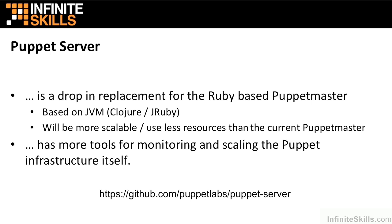You can find more information on the Puppet Server by visiting its development page at GitHub: github.com/puppetlabs/puppet-server. On that page you'll find information about the server itself, the current status, documentation on how to use the server, and some of the differences between operating the Ruby-based Puppet Master and the Java Virtual Machine-based Puppet Server.